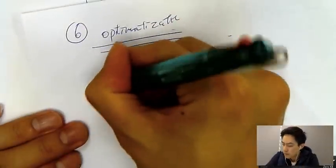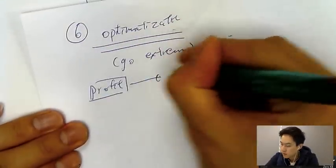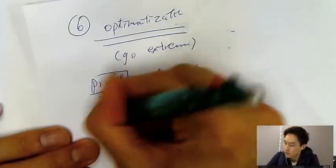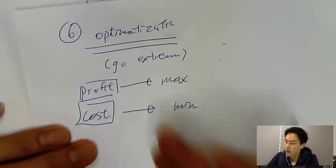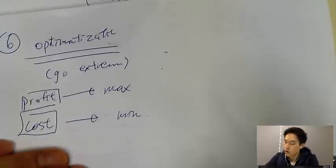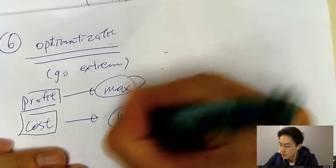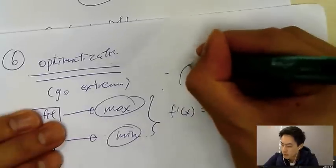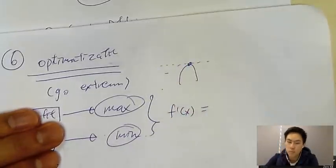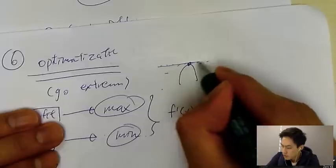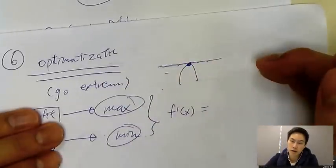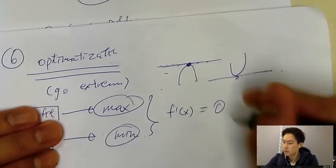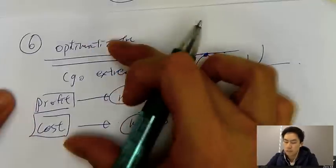If for the cost, then we want to have the minimum cost. But how is it related to differentiation? For the maximum and minimum, we should know that differentiation is always equal to how many. For a maximum, you can imagine it's like this, this point is the maximum. At this point, if you draw a tangent, it will be horizontal. The slope must be equal to zero. For a minimum as well, this one is also equal to zero. So this is a kind of optimization question.